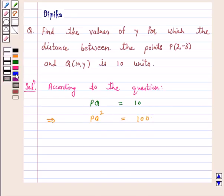And this implies PQ square is (10 - 2)² plus (y + 3)² is equal to 100.